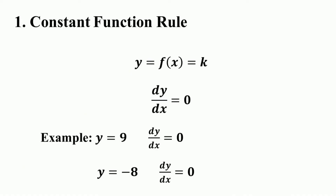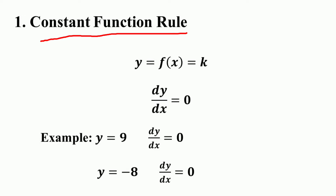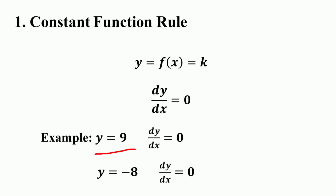The first rule of differentiation is the constant function rule. The derivative of a constant function f = k, where k is a constant, is always zero. So if y = f = k, then d/dx = 0. For example, if y equals a constant, then the derivative of this constant function dy/dx is equal to zero.